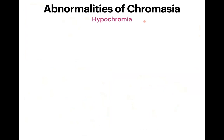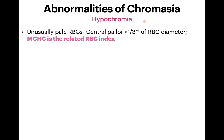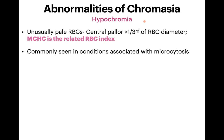An RBC is called hypochromic when the central pallor is more than one-third of the RBC diameter. The related RBC index is MCHC, not MCH. Hypochromia is commonly seen in conditions associated with microcytosis such as iron deficiency anemia and thalassemias.